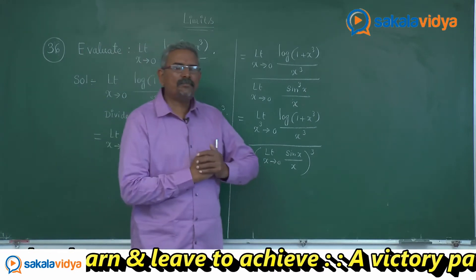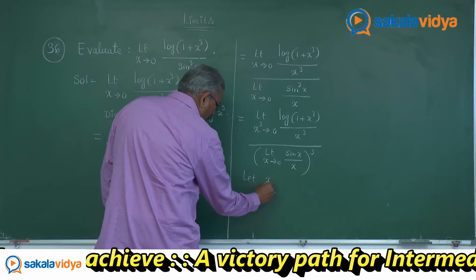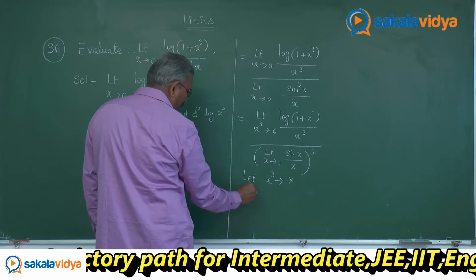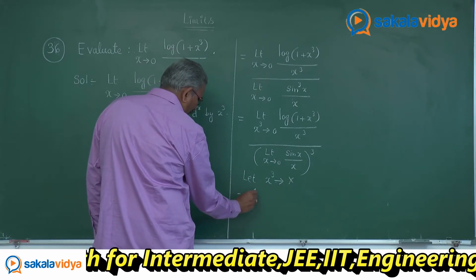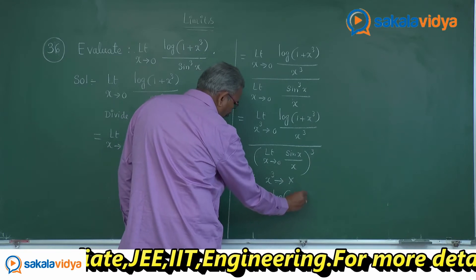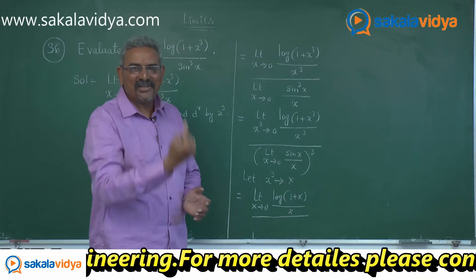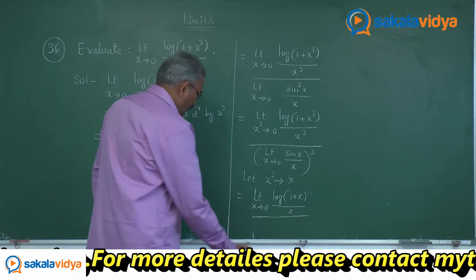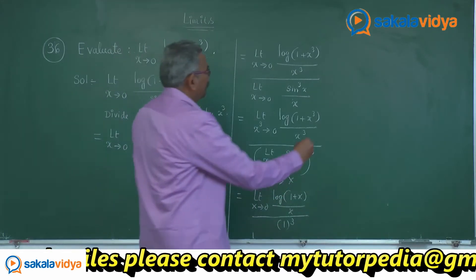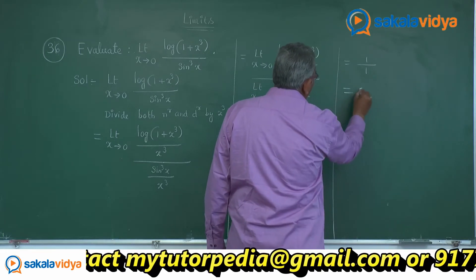Now let us assign x cube to some capital X. Let us assume x cube is replaced by capital X. As x cube approaches to 0, this becomes limit capital X approaches to 0 of log of 1 plus capital X by capital X, divided by limit theta tends to 0 of sin theta by theta, the whole thing cubed. Both of these are standard results equal to 1. So we get 1 divided by 1 cubed, and the answer is 1.